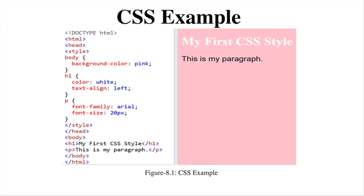The CSS example output shows 'My first CSS style' as the heading and 'This is my first paragraph' as the paragraph. The background color is set to pink, heading H1 is in white color, the font styling is Arial, and font size is 20 pixels. The paragraph text is black by default, but we can change its styles using CSS. The background is set to pink using background-color: pink.